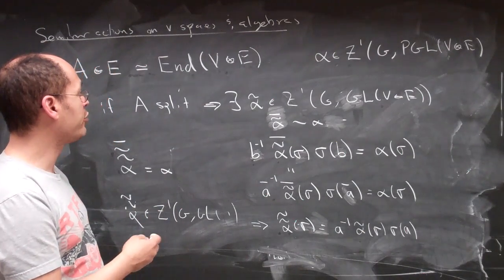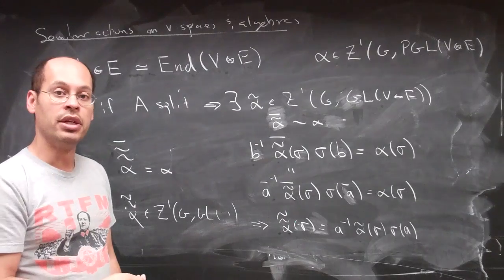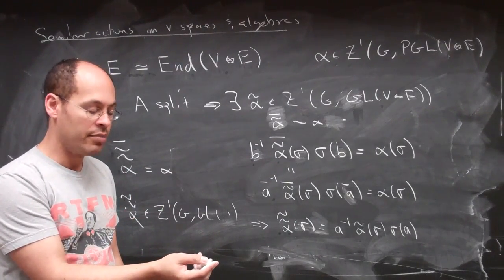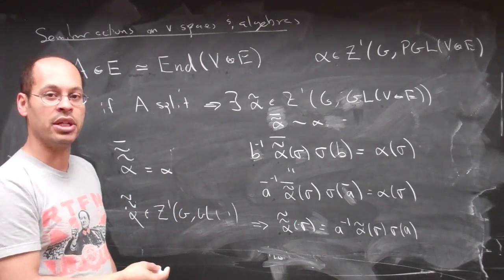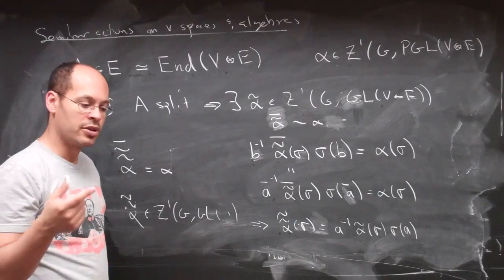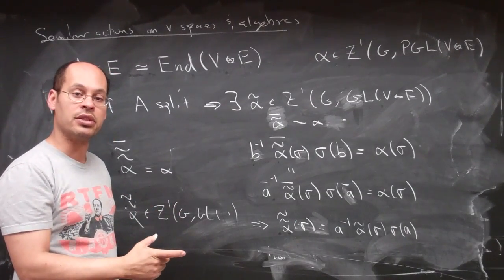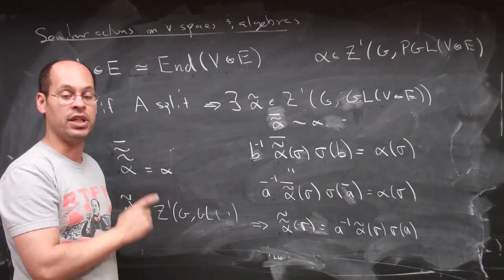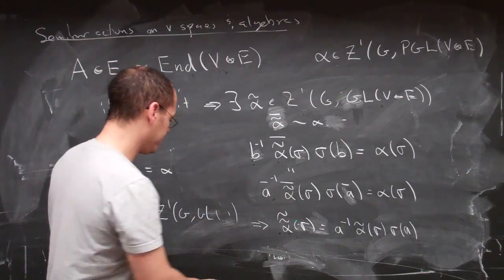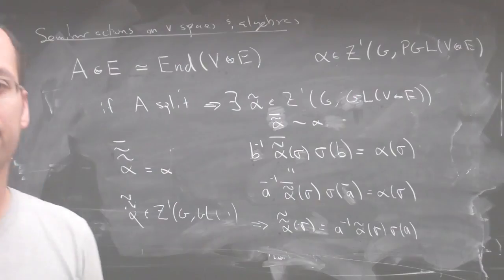And so that says that if my alpha is actually split, then I can take that particular action. So if my algebra A is split, then I can take my semi-linear action on the endomorphisms and literally lift that exact semi-linear action to a semi-linear action on V tensor E, which induces that one. Let's do that.